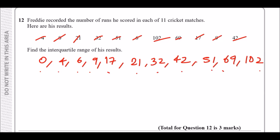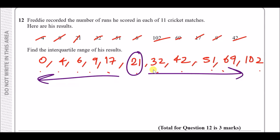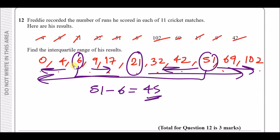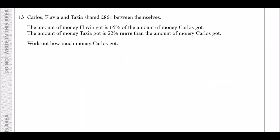Count to confirm 11 values are listed. To find the IQR, identify the median — with 11 data points the middle value (6th) has five on each side, which is 21. The lower quartile Q1 is 6 and the upper quartile Q3 is 51. The interquartile range is Q3 − Q1 = 51 − 6 = 45.